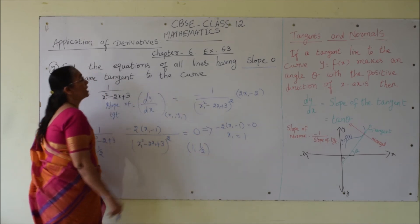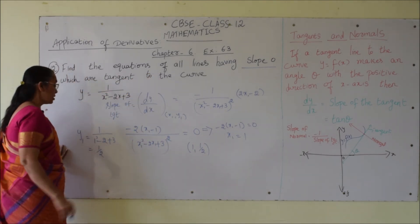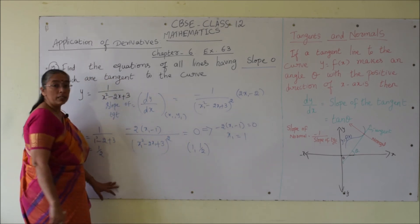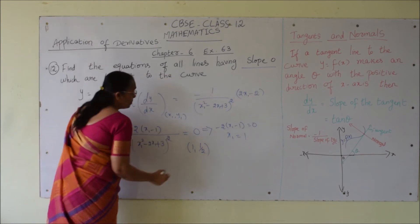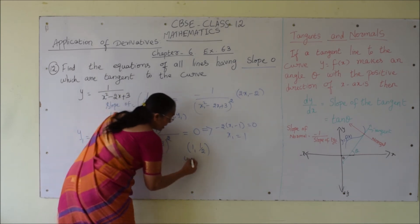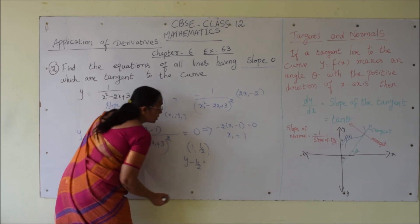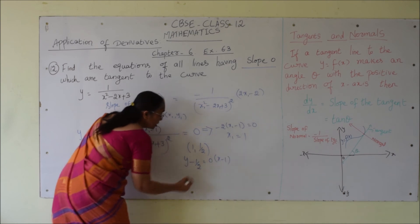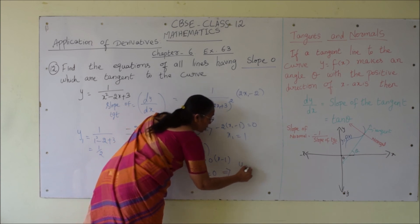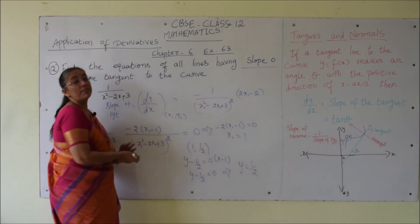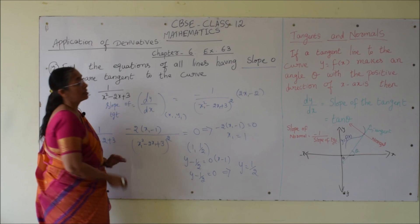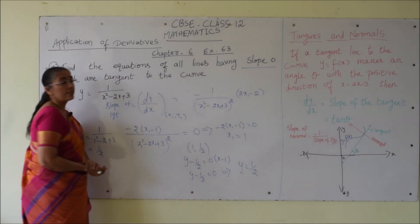At this point the tangent has slope 0. The equation of the tangent passing through (1, 1/2) with slope 0 is y minus y1 equals m times (x minus x1), giving y minus 1/2 equals 0, so y equals 1/2. This is a straight line parallel to the x-axis, and we know any line parallel to the x-axis has slope 0, so y equals 1/2 is the required straight line.